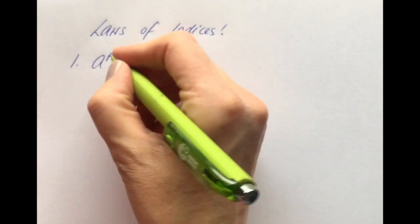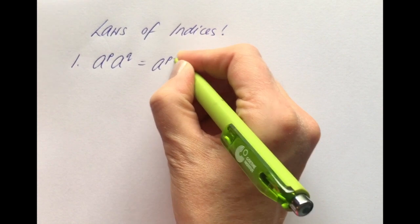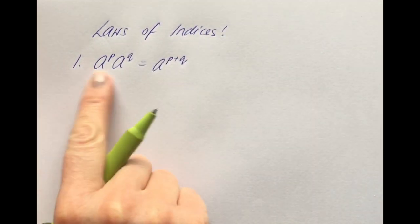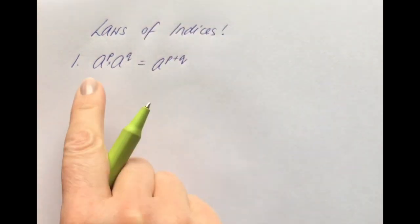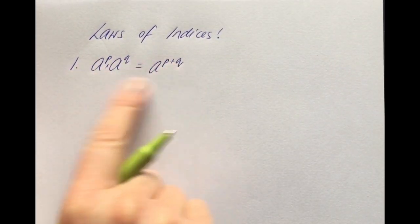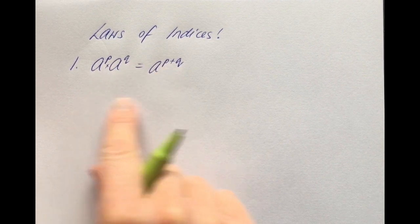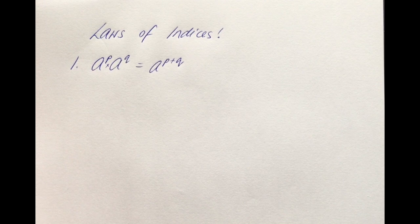The first law is written as: a to the power of p, times a to the power of q, equals a to the power of p plus q. When two terms are written side by side like this it means they are multiplied. This can be a little harder to understand, so I'm going to explain each of these laws using lots of examples so you fully understand what it is saying.